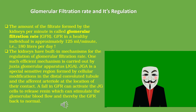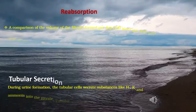The glomerular filtration rate (GFR) is the amount of filtrate formed by the kidneys per minute. In a healthy individual, GFR is approximately 125 milliliters per minute, that is 180 liters per day. One efficient mechanism for GFR regulation is carried out by the juxtaglomerular apparatus (JGA), a special sensitive region formed by cellular modifications in the DCT and the afferent arteriole. A fall in GFR can activate JG cells to release renin, which stimulates glomerular blood flow and thereby restores GFR to normal.